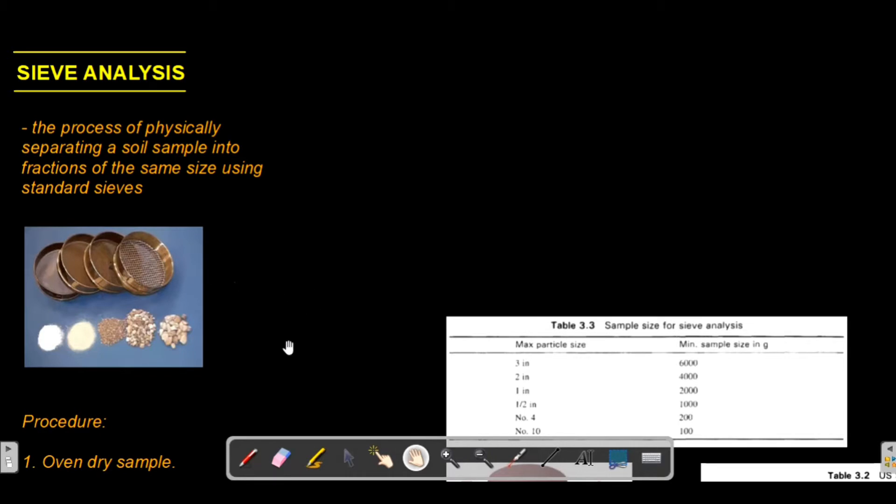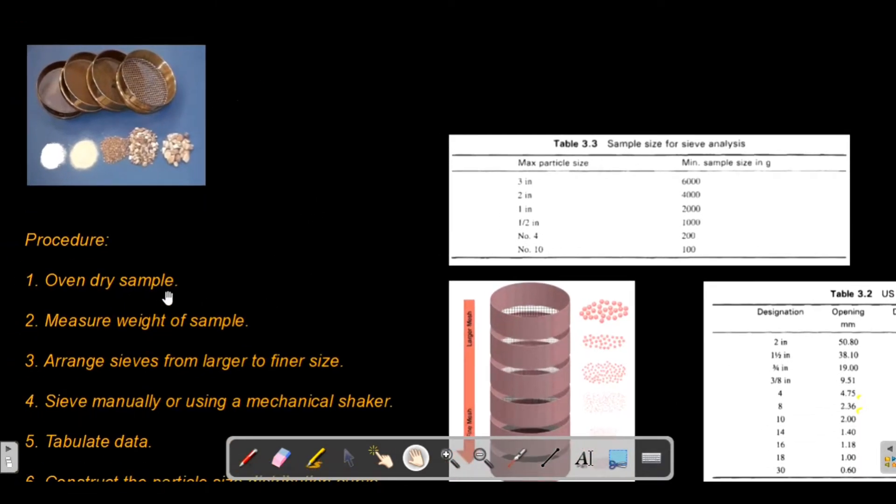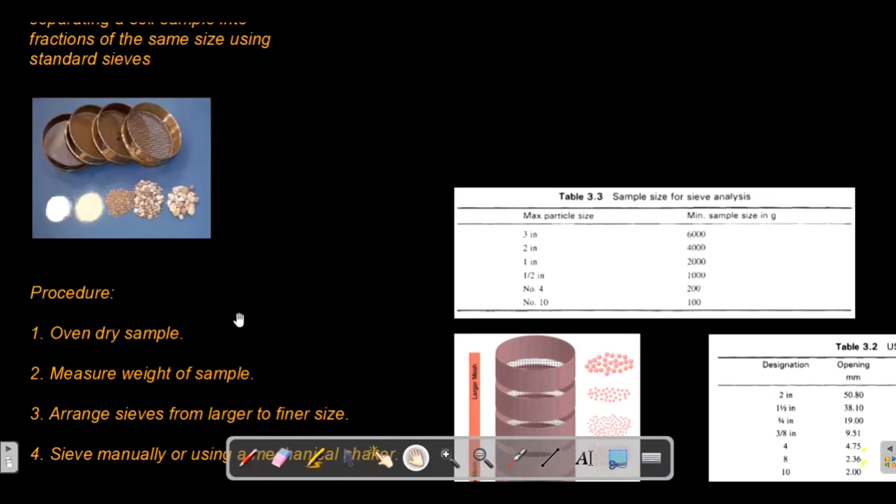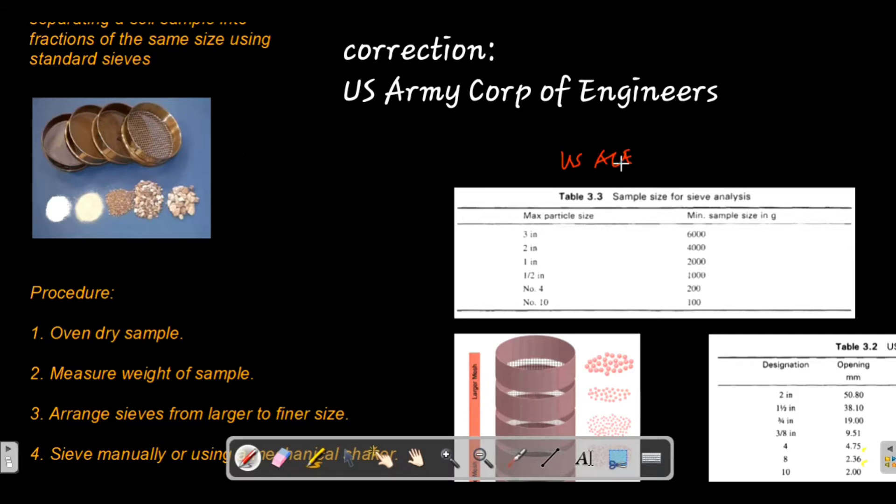I will be discussing the procedure. First, you have to oven dry the sample. But before oven drying, you might be wondering about the sample size - how many kilos to put in the sieve for analysis. The US Army Corps of Engineers gives this table as a guide in preparing your samples for sieve analysis depending on the maximum particle size of your soil sample.